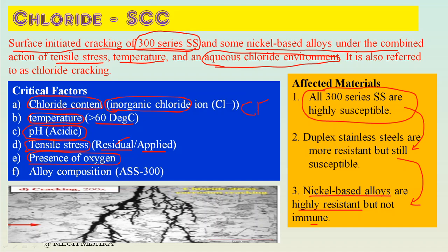The presence of oxygen changes the electrode potential into the CLSCC susceptible zone. The last critical factor is alloy composition - 300 series stainless steels such as SS304 and SS316L are much more prone to CLSCC. Cracks are branched in nature and may be intergranular or transgranular.